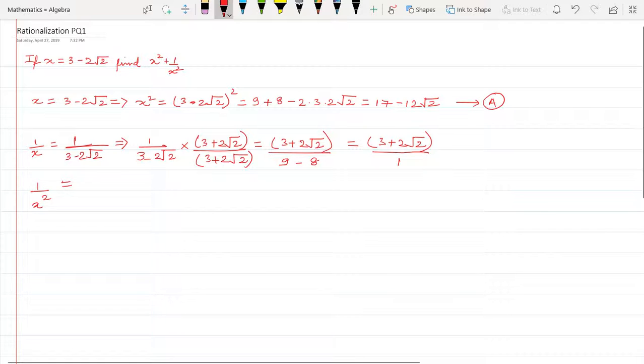My Part B actually is 1 upon x squared. So this will become equal to (3 plus 2 root 2) the whole square, which is equal to 9 plus 8 plus 2 into 3 into 2 root 2, which is equal to 17 plus 12 root 2. And this is my Part B.